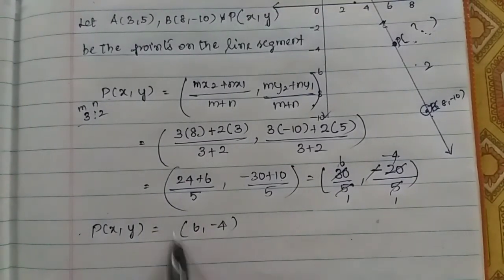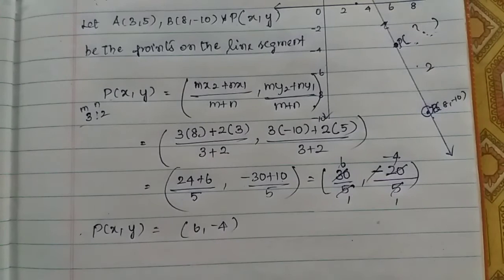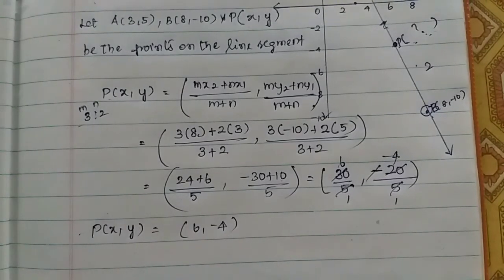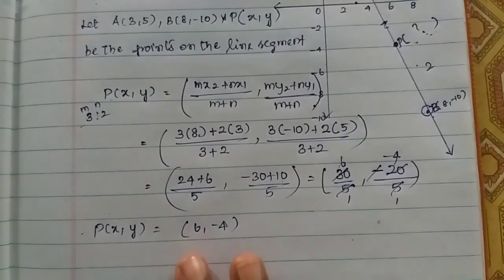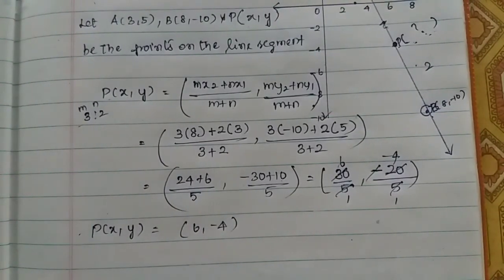The coordinate of the point is (6, −4). That is the section formula applied. That is all.